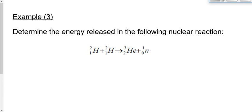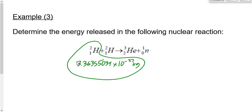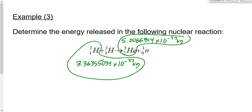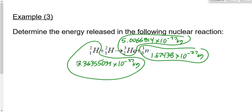For homework, complete example three — a fusion reaction. Given data: hydrogen-2 mass = 3.36355034 × 10⁻²⁷ kg (remember there are two of them); helium-3 mass = 5.0066814 × 10⁻²⁷ kg; neutron mass = 1.67438 × 10⁻²⁷ kg. Find the mass defect first, then use E = mc² to get the energy released.